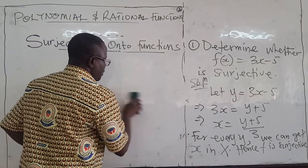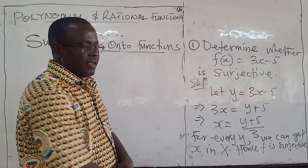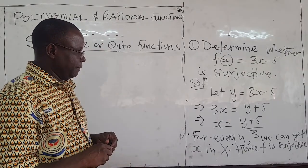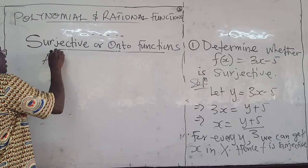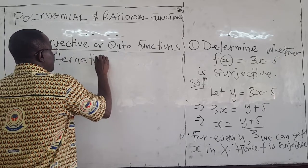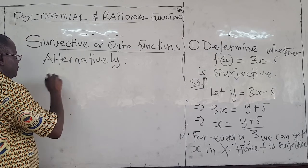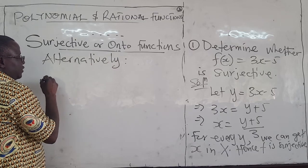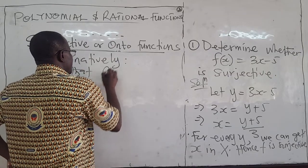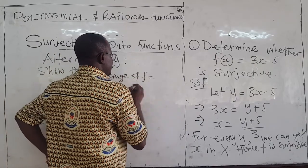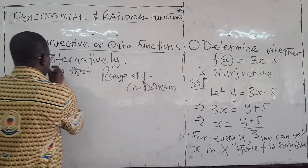Alternatively, you could also try to prove that the range equals the co-domain. An alternative way is to show that the range of f is the same as its co-domain. This is an alternative way of showing that it is surjective.